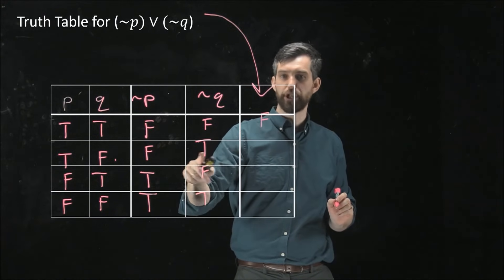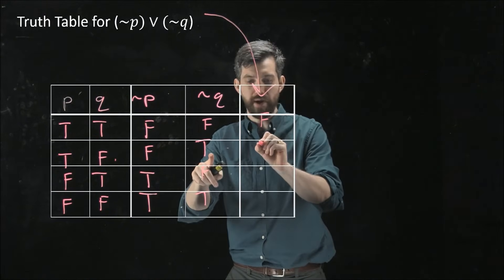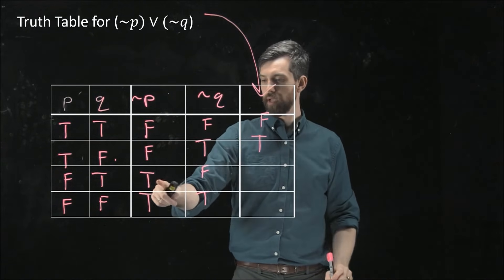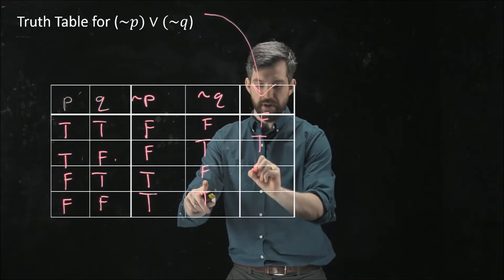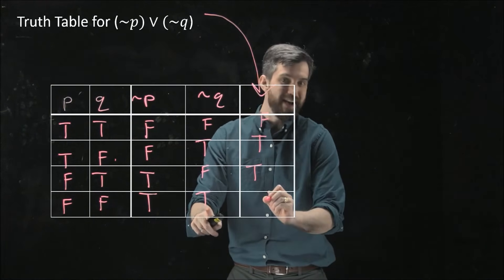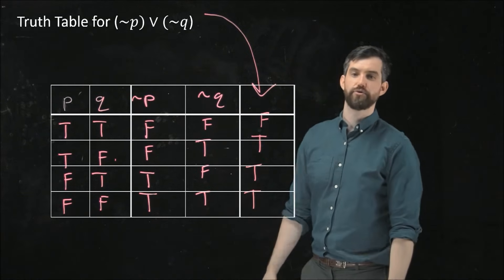Down here, one of the two is true. This one's true, so one or the other is true. That's going to be true. True and false, one or the other, that's another true. And true and true, one of them is true. In fact, both of them are true, so that's a final true.